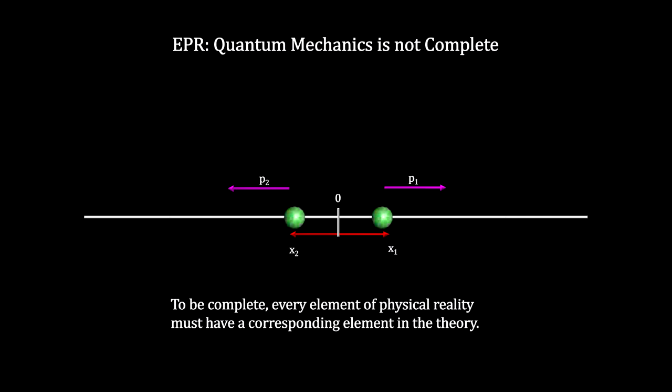Letting x represent the distance traveled, x2 would have the opposite sign of x1. Letting p represent particle momentum, and given that the initial momentum was zero, p2 would have the opposite momentum of p1, so their sum would be zero.